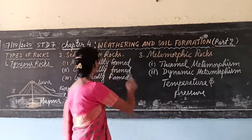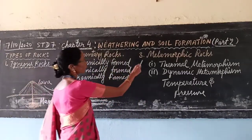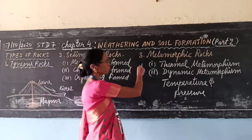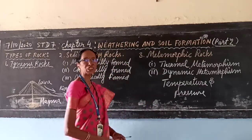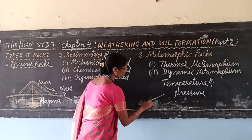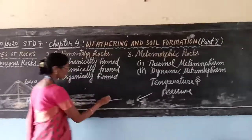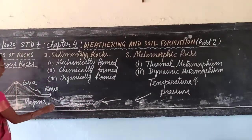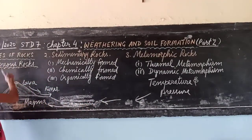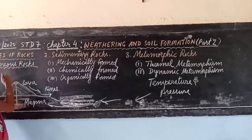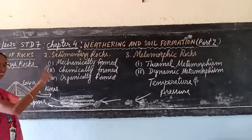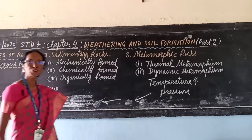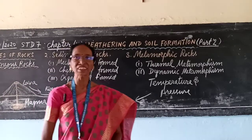These three rocks — one after another — when formed in the deep interior, may again change into magma. Again, magma will be directed to form igneous rocks, and this completes a cycle. This is known as the rock cycle. Thank you.